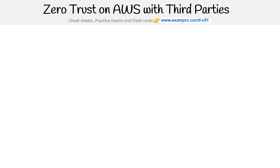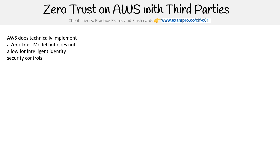So now let's see how we would do zero trust on AWS with third parties. AWS does technically implement a zero trust model, but does not allow for intelligent identity security controls, which you can do, but it's a lot of work. So let's compare it against a third party where we would get the controls that we would not necessarily get with AWS.